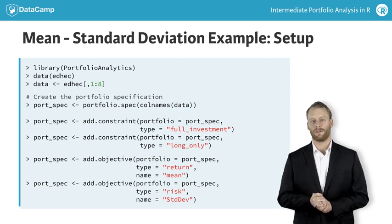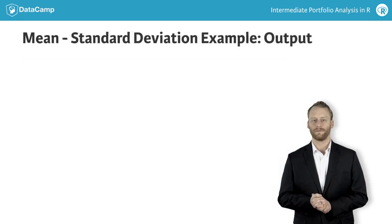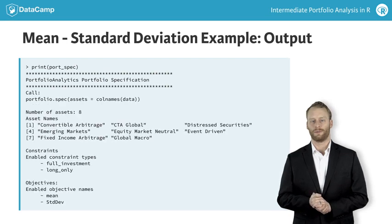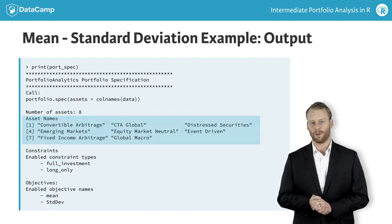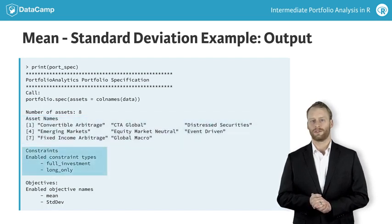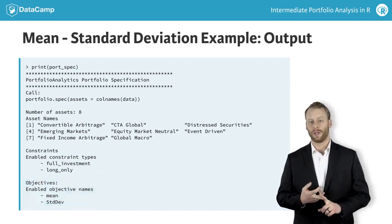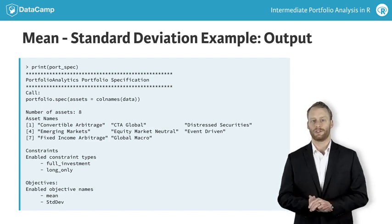Don't worry if this is a lot to take in for now — you will see plenty of other examples in this course. Now you can print the portfolio specification object to see a concise representation of the specification. You see the names of the assets in the portfolio, a list of the constraints, and a list of the objectives. In this case, the portfolio specification consists of eight assets, two constraints — full investment and long only — and two objectives: mean and standard deviation.